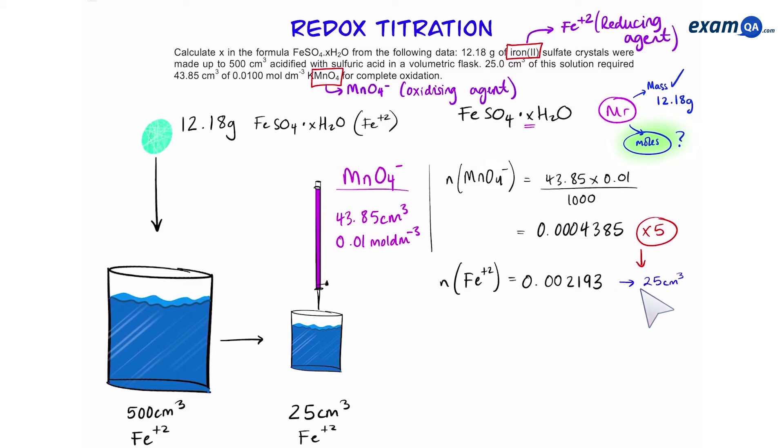Remember, this is only in 25 centimeters cubed. Our original solution was 500 centimeters cubed. That means the original solution had 20 times more moles than the 25 centimeter cubed sample. So times it by 20 and that gives you the number of moles of iron 2 plus in the original 500.